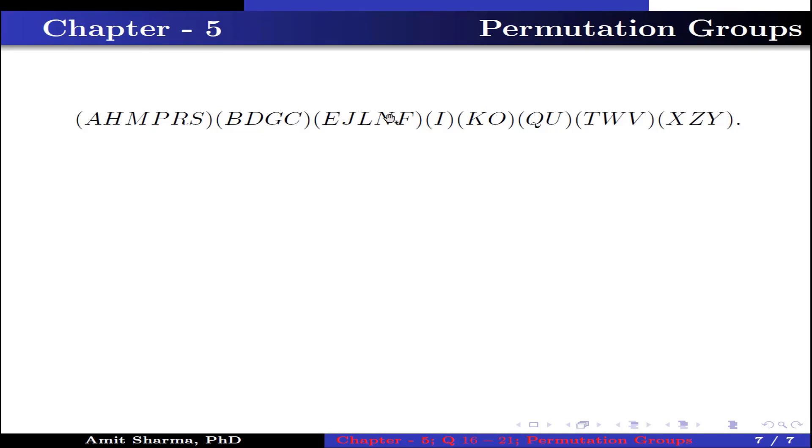(I) means I has image I. (KO) means K has image O and O has image K. (QU) means Q has image U and U has image Q. (TWV) means T has image W, W has image V, and V has image T. (XZY) means X has image Z, Z has image Y, and Y has image X.